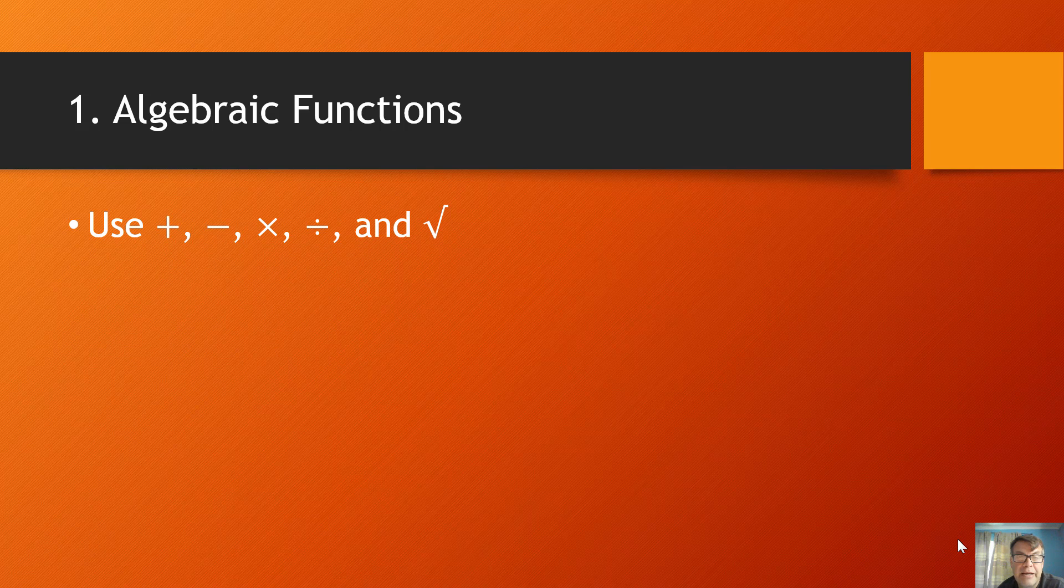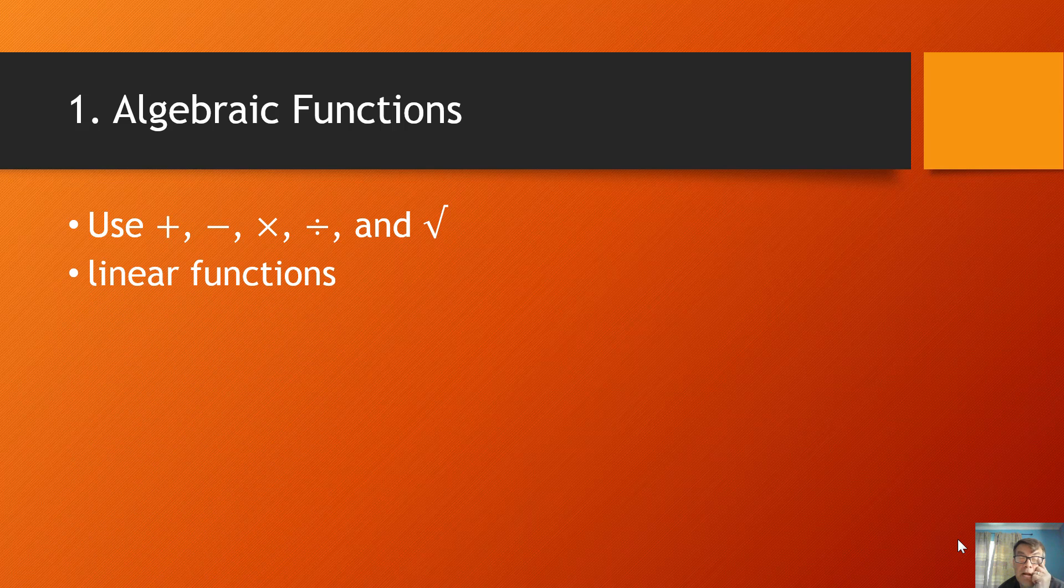So here's some examples of algebraic functions. Again, algebraic functions use add, subtract, multiply, divide, and square roots, and so forth. Linear functions, these are functions that are lines. Line functions, if they pass the vertical line test, in other words, they're not straight up and down, then they are functions. They are first degree functions, x to the first power. Anything to the first power is that same thing. 10 to the first power is 10. So x to the first power is x.